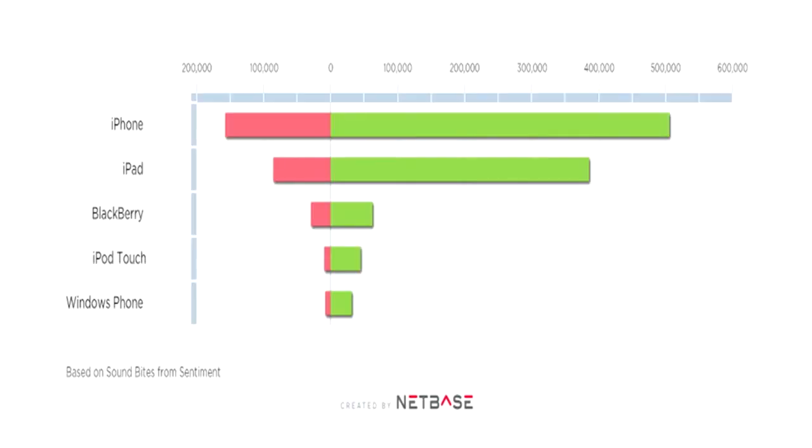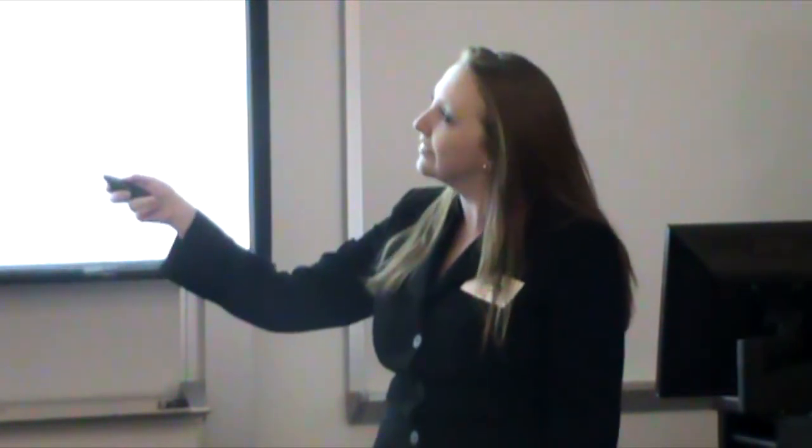We also wanted to compare positive and negative sentiment. Obviously, if something is having a lot of buzz but it's really negative, we don't necessarily want our app to be on that platform. Luckily, we found all five devices are overwhelmingly positive. What is interesting is that the iPhone and the iPad actually have more negative sentiment than the other three. But even with that negative sentiment, iPhone and iPad are still the top devices.